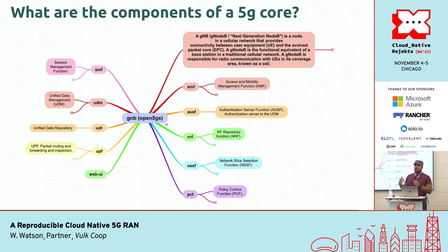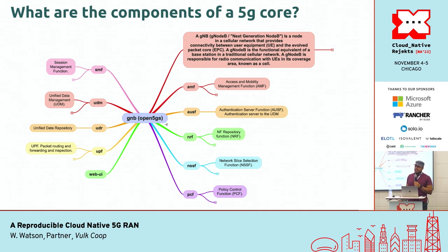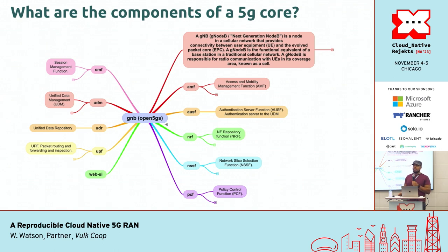So what is a 5G node, more specifically? A GNB, or gNodeB. That is the part of the network responsible for connecting the UEs — user equipment, so your phone — to the Evolved Packet Core. It's really kind of the replacement for what was called the base station in previous telecommunications equipment. When you have a gNodeB, it's assigned to a coverage area for all the UEs — all the phones. That's called a cell. That's where you get 'cell phone.'